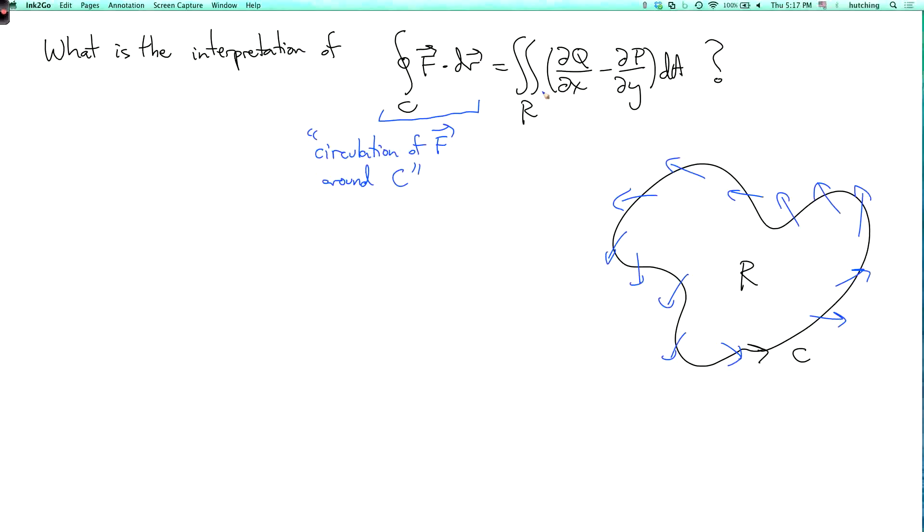So that's equal to an integral over all of R. And what is this? So the idea is that this measures the local rotation of the vector field. Okay, so what do I mean by that? So for example, suppose F is <-y, x>. So here P is equal to -y and Q is equal to x. So that tells us that dQ/dx minus dP/dy equals 2.